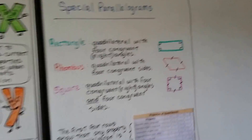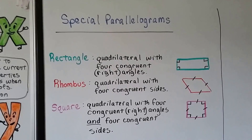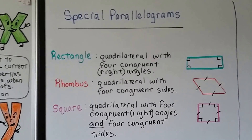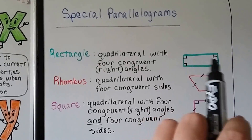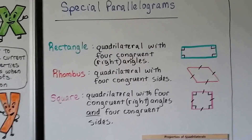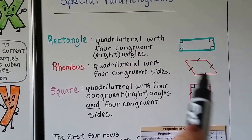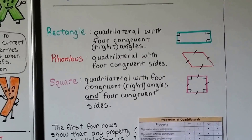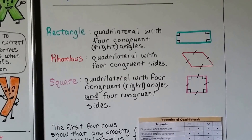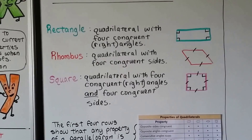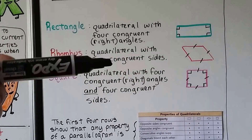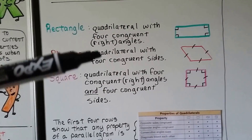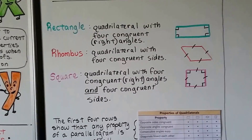To wrap up the special parallelograms: a rectangle is a quadrilateral with four congruent right angles. A rhombus is a quadrilateral with four congruent sides. A square is a quadrilateral with four congruent right angles and four congruent sides. So it's like we're combining the rectangle with the rhombus — four congruent right angles from the rectangle, four congruent sides from the rhombus.